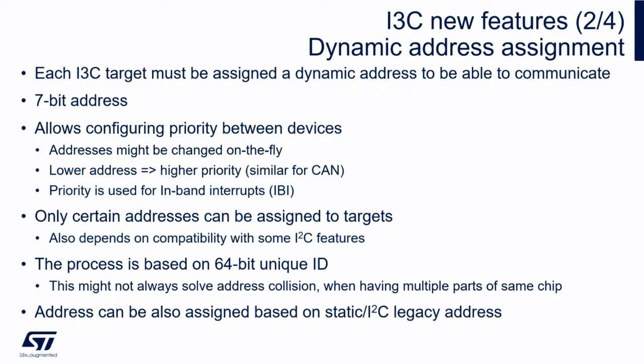Another new feature is dynamic address assignment. You can assign different 7-bit addresses to the targets, which can work as a priority on the bus. There is also a process of discovering devices on the bus and assigning these addresses — we read a 64-bit unique ID and based on this we assign the 7-bit address. We can also assign addresses based on static or I2C legacy addresses, which is useful since most sensors that support I3C currently also support I2C.